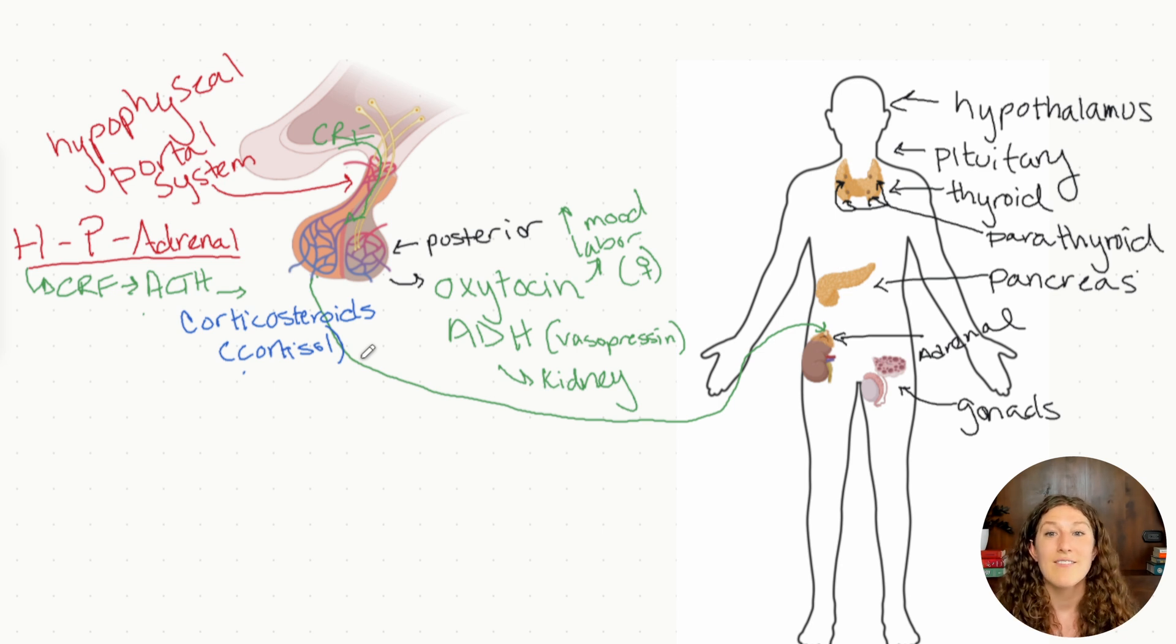Now both CRF and ACTH are peptide hormones that are going to bind to cell surfaces, but cortisol is produced from cholesterol and is a steroid hormone. So its mechanism of action is going to be going directly into the cell all the way into the nucleus and acting as a transcription factor for its target cells. All right, and that's axis one, HPA axis, where we're impacting the adrenal glands.